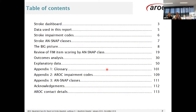Each report starts off with a table of contents breaking up the report. There is a dashboard, an information section on the data that's used in the report. If applicable there are particular impairment codes and ANSNAP classes that are used. Then we look at the big picture of comparing services to national data. We focus on some FIM scoring and some outcomes analysis including impairment specific data items, and then some explanatory data. In the appendices there is a glossary which provides definitions of terms we use, as well as a complete list of the AROC impairment codes and the ANSNAP classes.